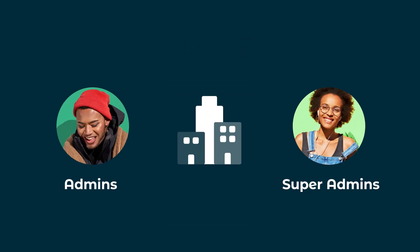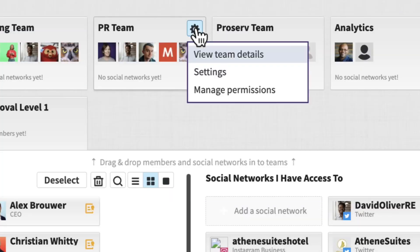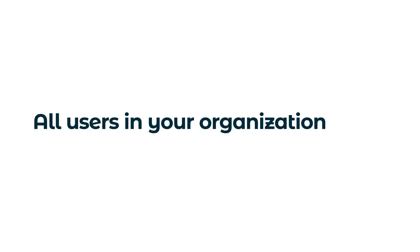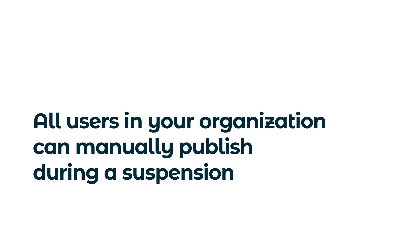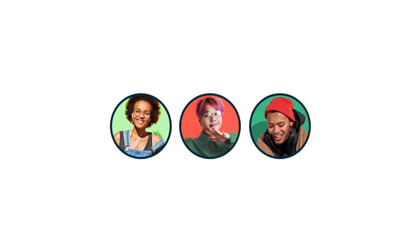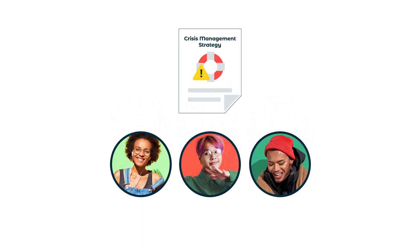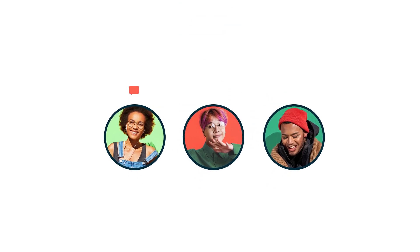Because all organization admins and super admins can use this feature, it's a best practice to regularly audit your permission settings. Also keep in mind that all users in your organization can manually publish during a suspension, so make sure the whole team is clear on guidelines for posting in a crisis — and better yet, implement a publishing approval process in your Hootsuite organization.